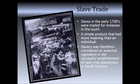Slaves in the early 1700s were traded for molasses in the South, a simple product that had more meaning than an individual. Slavery was therefore considered an essential ingredient in the successful establishment of cash crop plantations in South Carolina.